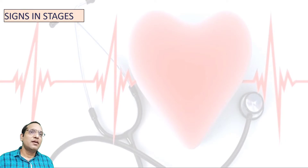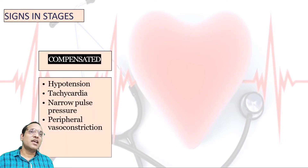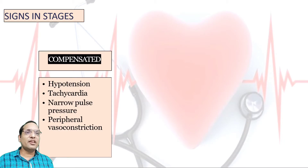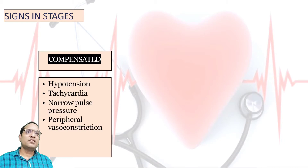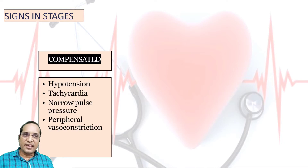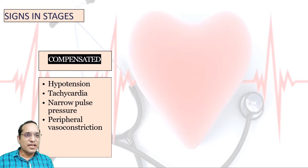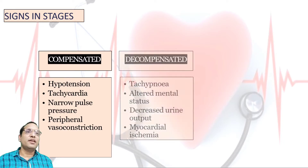What signs can be seen in the different stages of shock? In the compensated stage, there is hypotension, tachycardia, narrow pulse pressure, and peripheral vasoconstriction.